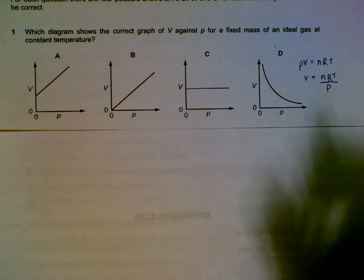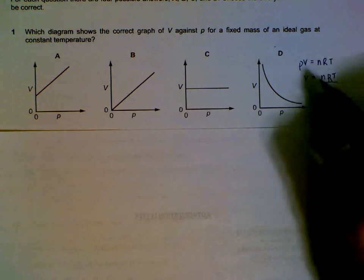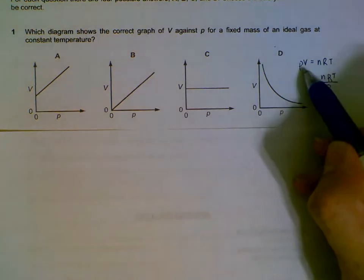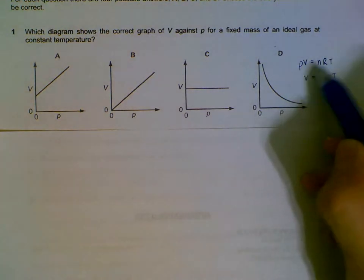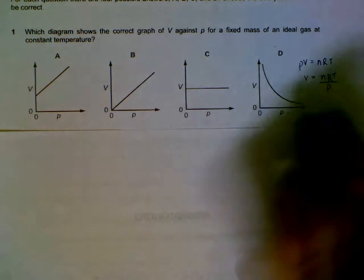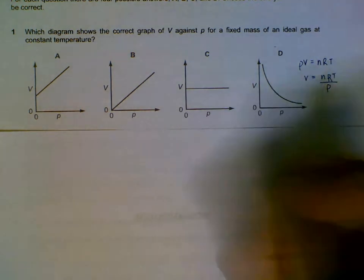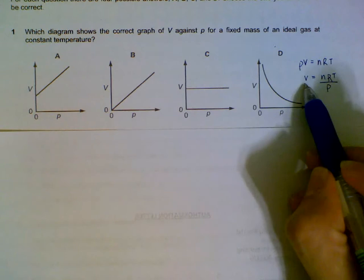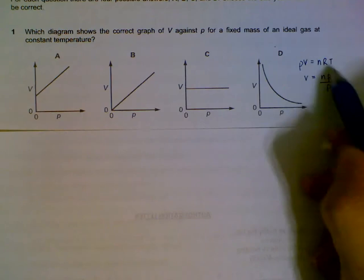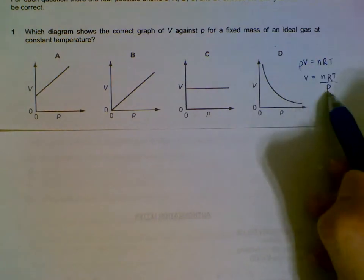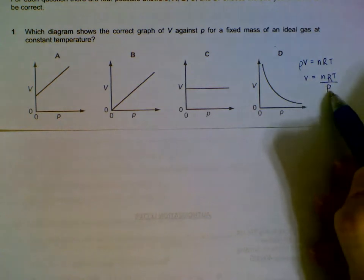Number one: graph between pressure and volume. First of all, we start off with the equation pv equals nrt. Since v is the y-axis, the vertical axis, we'll leave it on the left side and bring everything, including the p, to the right side. So we have v equals nrt over p.